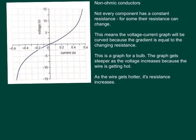So that particle model brings us to the last part of the lesson which is about non-ohmic conductors. As I said at the beginning not every component has a constant resistance and for some their resistance will change. This means the voltage current graph like the one on the left is going to be curved because the gradient is equal to the changing resistance. Now the graph on the left is for a bulb. The graph gets steeper as the voltage increases because the wire in the bulb is getting hot and as the wire gets hotter its resistance is increasing and you can see this in the way that the gradient is getting steeper and steeper.